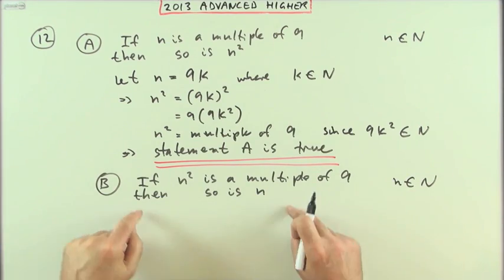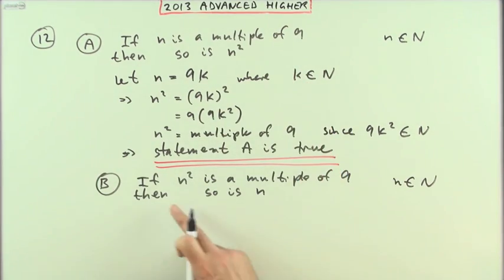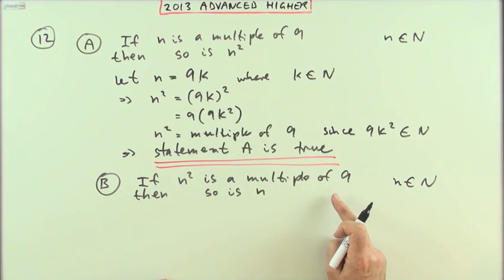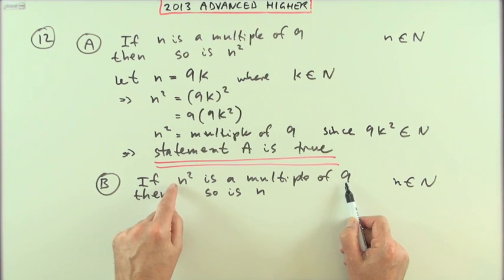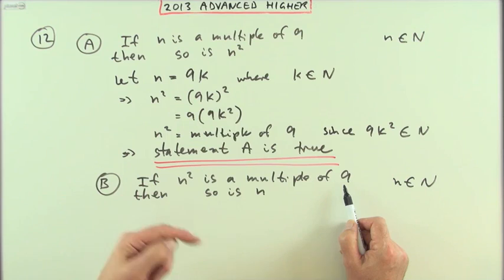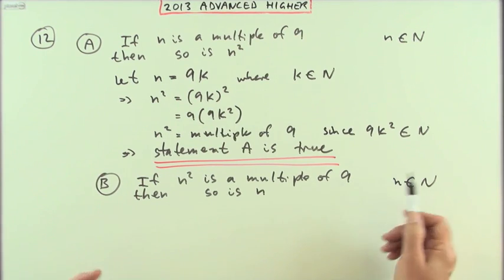And part B, the converse of part A. If n squared is a multiple of 9, then so is n, or is it? So a counterexample. All you need to do is look for a multiple of 9, which is a square, and then check its square root. Well, the first one there, is there in front of you, 9.